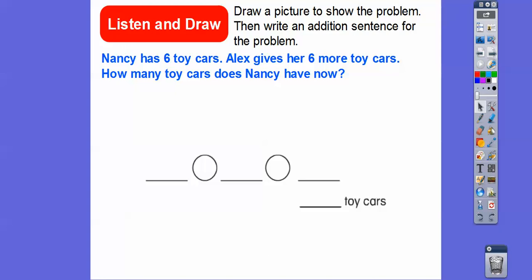Nancy has six toy cars. Alex gives her six more toy cars. How many toy cars does Nancy have now? So let's draw a picture.